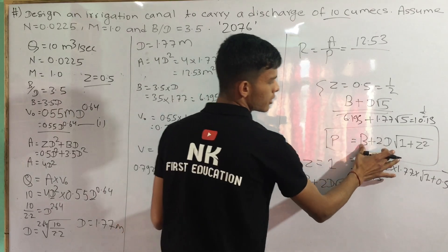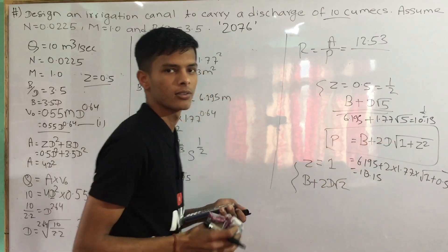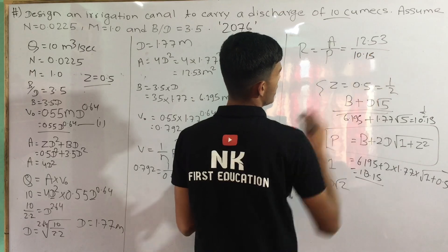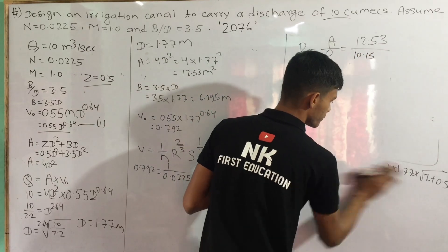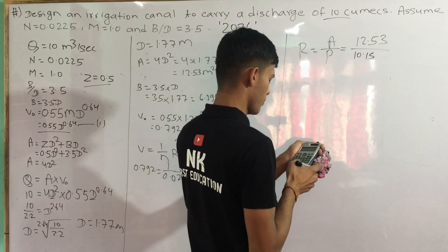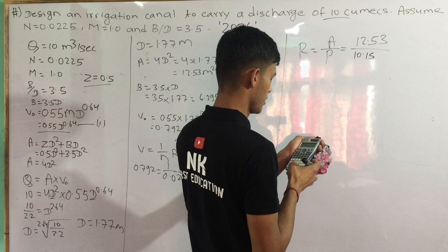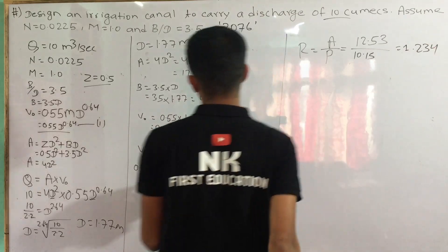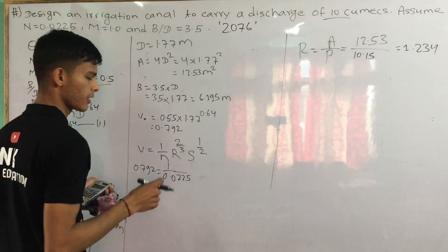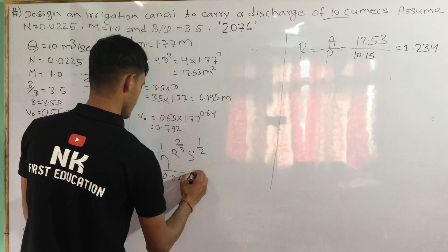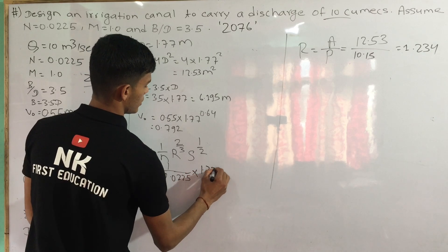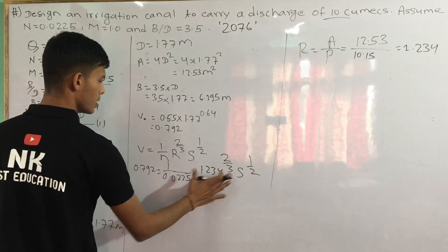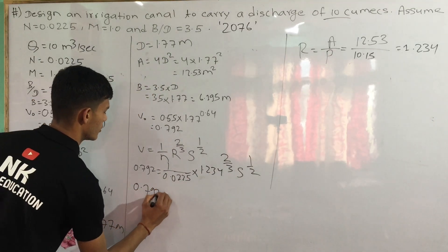Now we calculate the hydraulic radius R = A / P = 12.53 / 10.15 = 1.234 meters. This is the hydraulic radius R = 1.234.